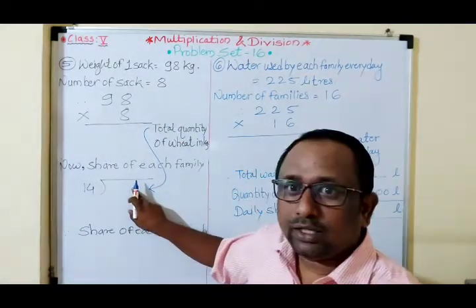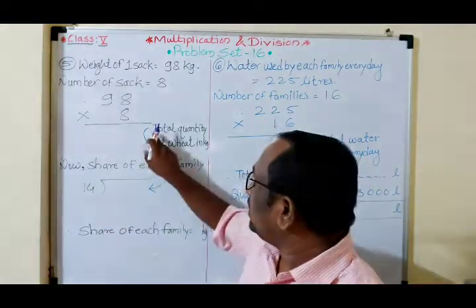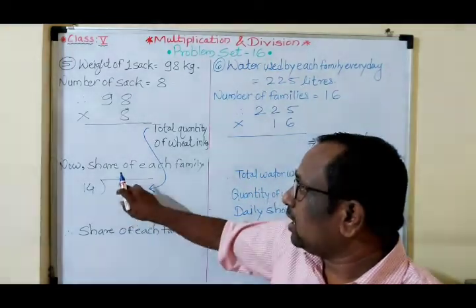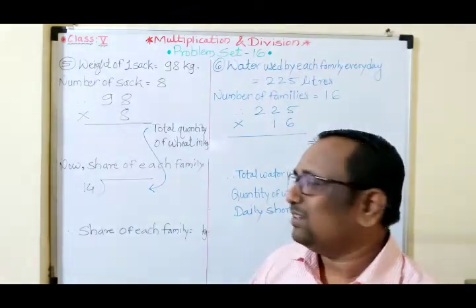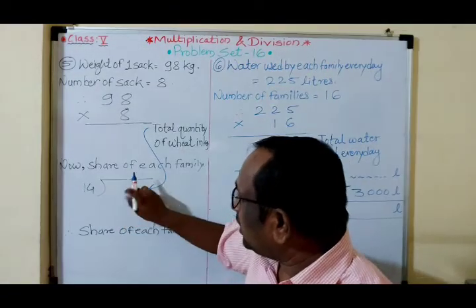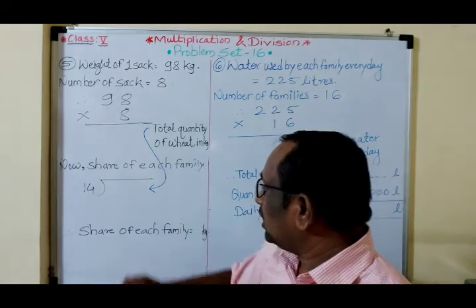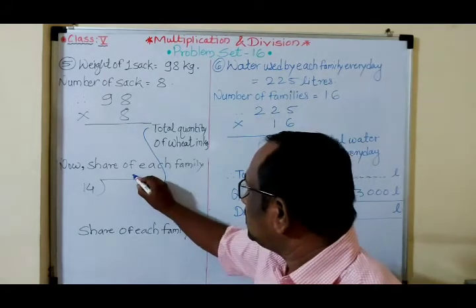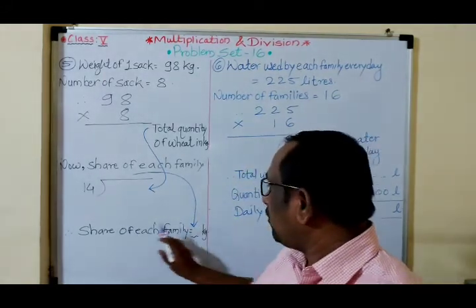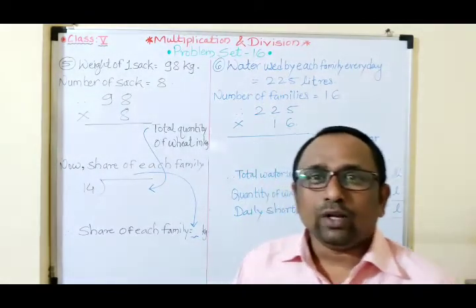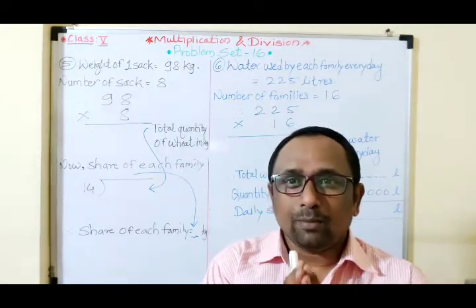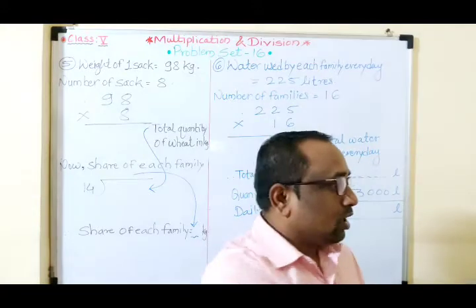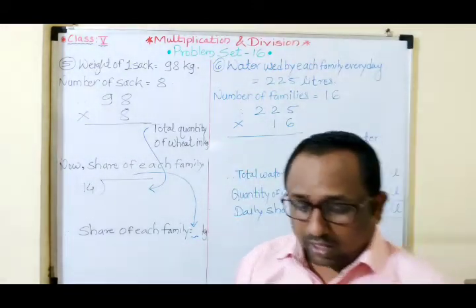Write the total quantity (from multiplication) as the dividend and 14 as the divisor. Do the division: total weight ÷ 14. Whatever quotient you get is the share of each family in kilograms. Write: 'Therefore, share of each family = ___ kg.' You have to do both multiplication and division for this example.